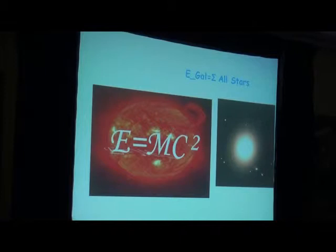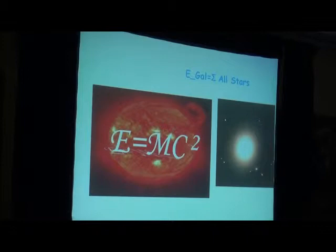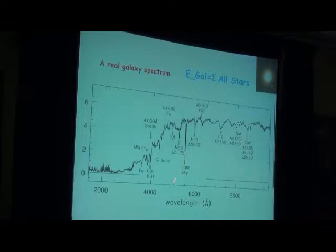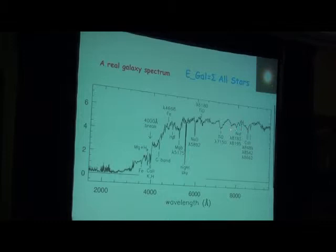In yesterday's lecture I claimed that we can model the energetics of individual stars with quite good accuracy. A galaxy is a collection of 10^12 such stars, so the question is whether we can have integrated models that sum up the energetics of individual stars and give us a reasonable physical model for a galaxy. Here is an ideal observation from the Keck telescope showing a galaxy spectrum of an old galaxy.